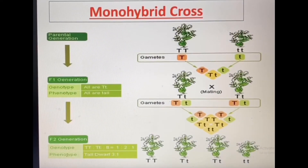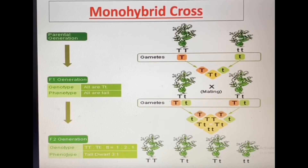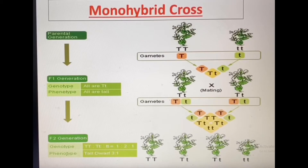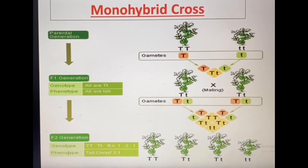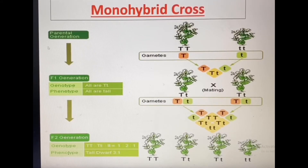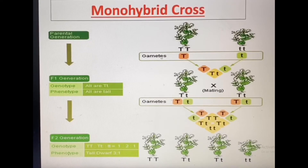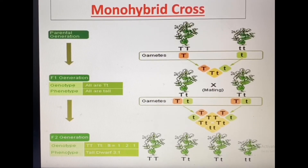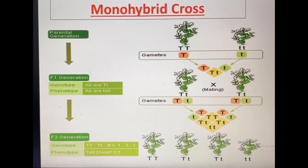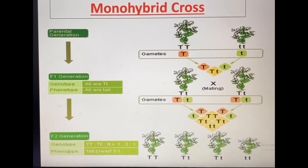Mendel's monohybrid cross can be explained in a very simple way, as you already know from your previous classes. There are two parental plants: capital T capital T is the genotype of the tall pea plants, and small t small t generates the short pea plant. During gamete formation, the paired genes get divided — from one diploid reproductive mother cell, four haploid daughter cells are produced. During gamete formation, the paired genes get divided into half: capital T from the tall parent and small t from the short parent.